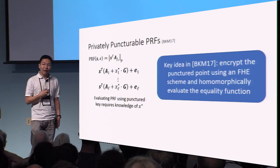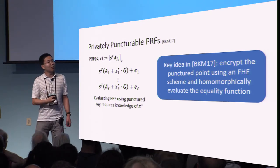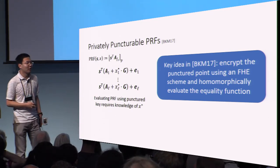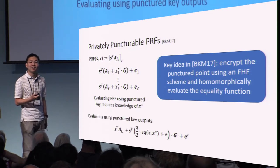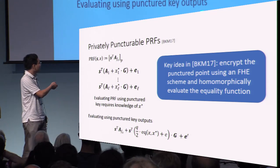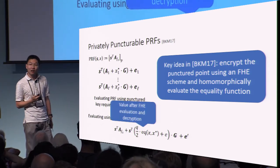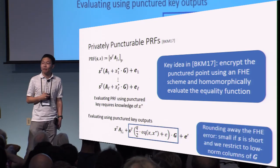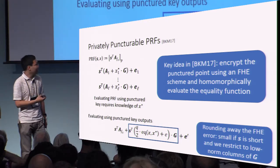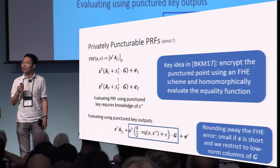The work of Boneh et al. from Eurocrypt this year shows how to avoid this by encrypting the punctured point using a fully homomorphic encryption scheme, replacing the equality function with homomorphic evaluation of the equality function followed by homomorphic decryption. A key insight in the work of Boneh et al. is a new way of rounding away the FHE noise and recovering the original value of the PRF. However, this approach still does not provide us flexibility in influencing the value obtained when we use the punctured key to evaluate at the punctured point.